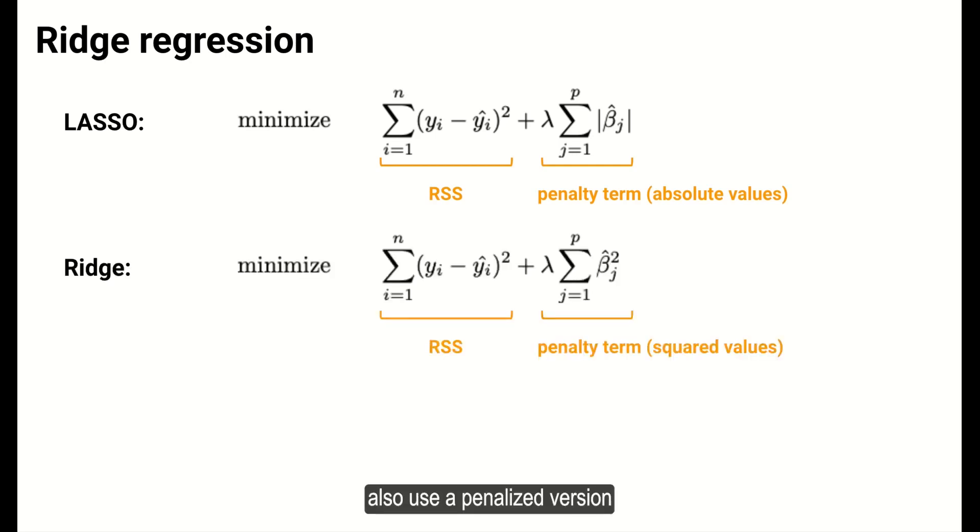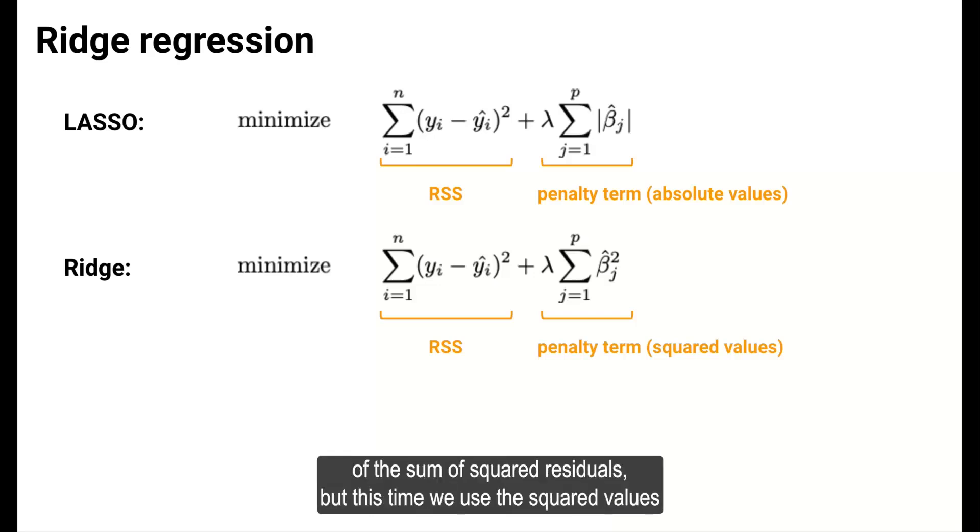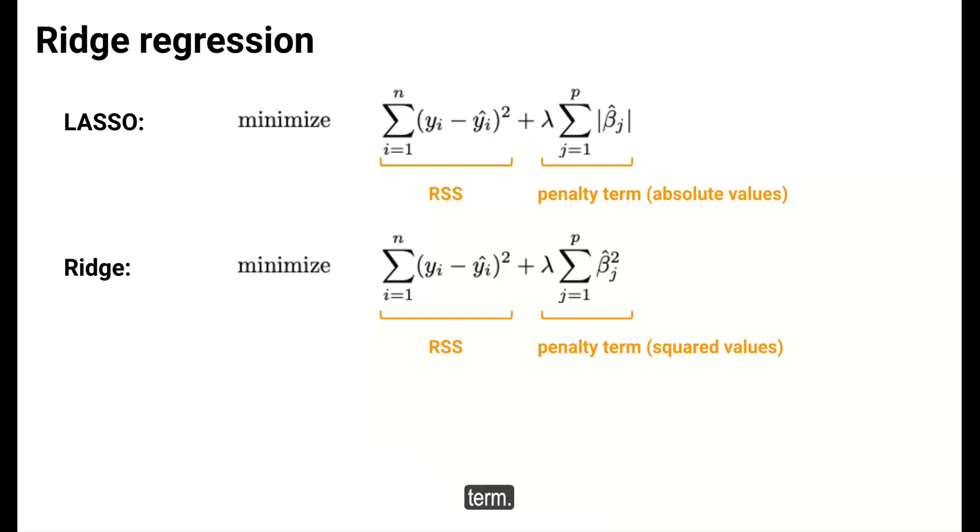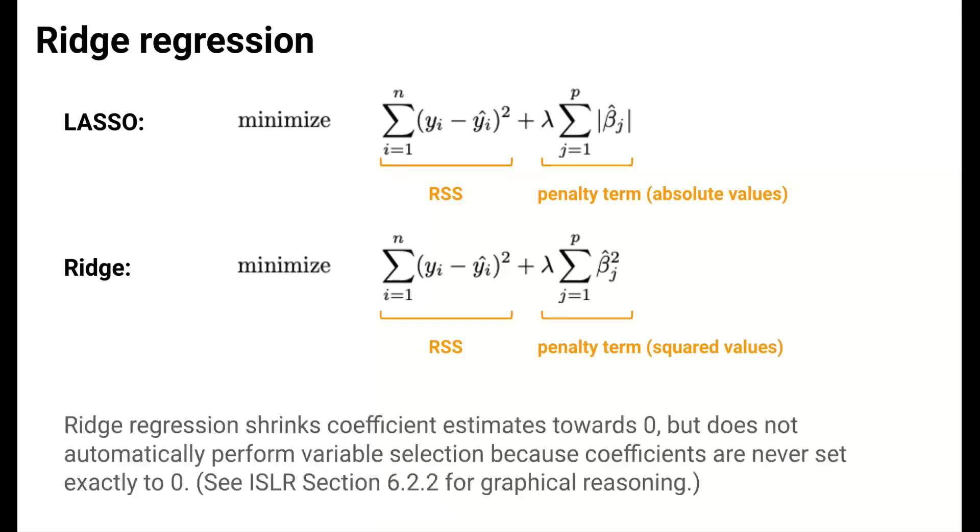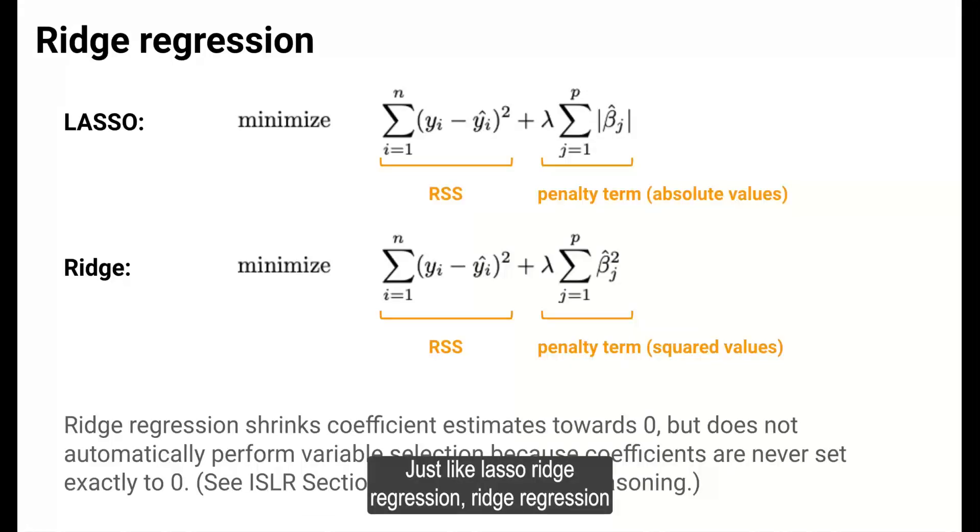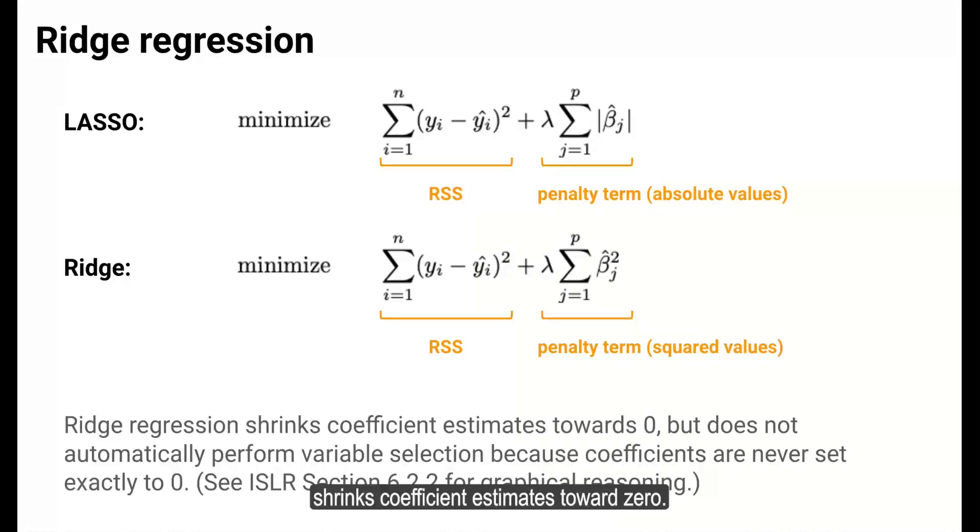With ridge regression, we also use a penalized version of the sum of squared residuals, but this time we use the squared values of the coefficient estimates in the penalty term. Ridge regression and the LASSO share the same key concepts. Just like LASSO, ridge regression shrinks coefficient estimates towards 0 because of this penalty term.